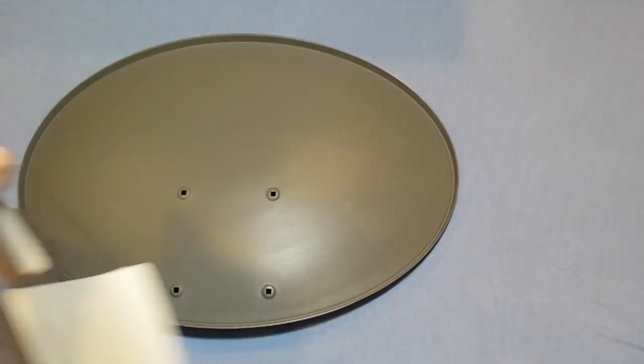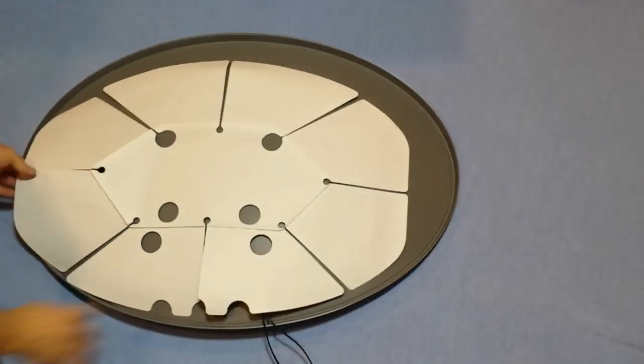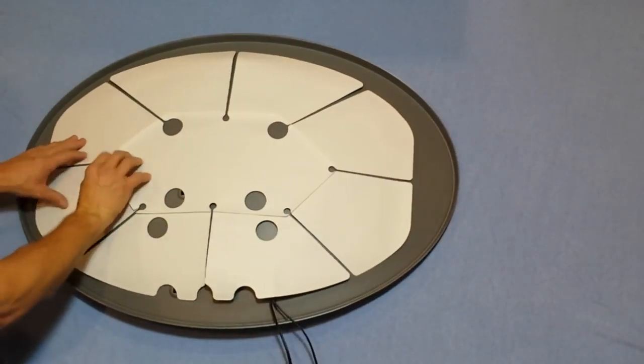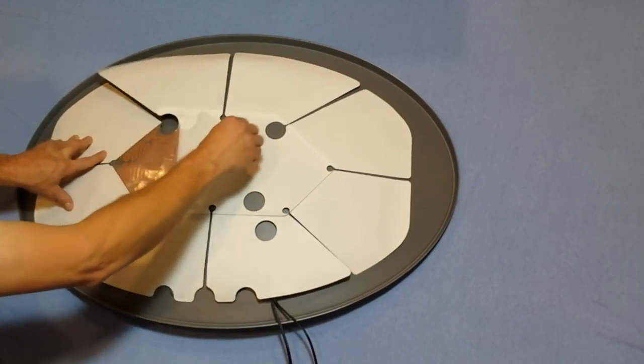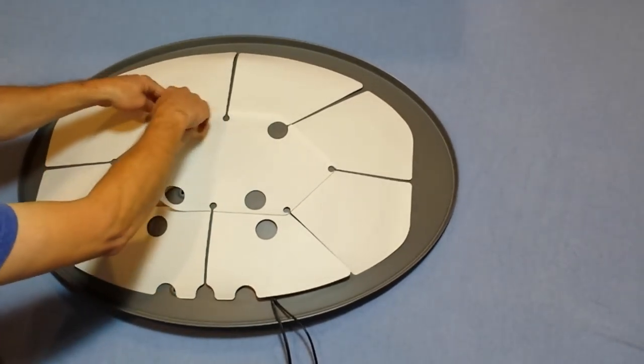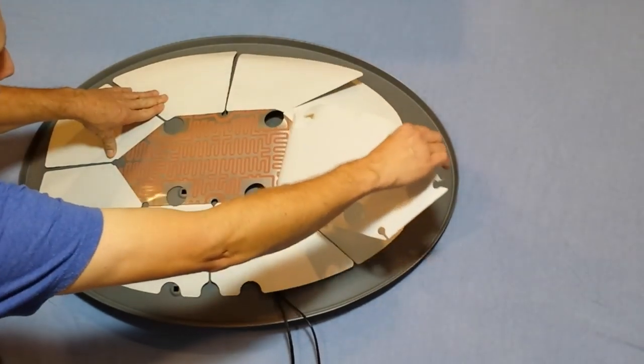The dish heater itself is a giant sticker. Once it goes on, it's very hard to get off, so make sure it's positioned properly. Start by pulling off the center part which is going to expose both the heating element and the adhesive on top of it.